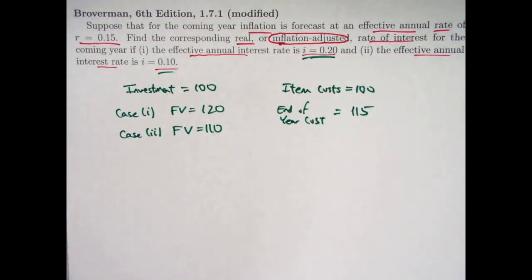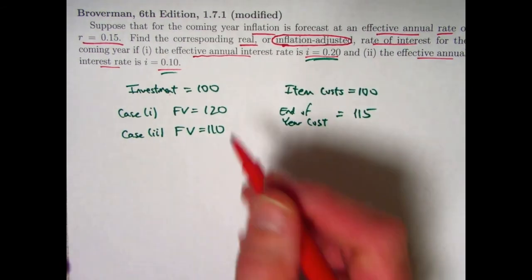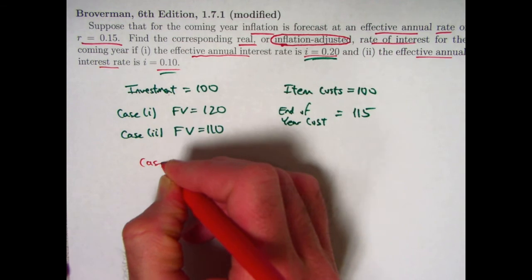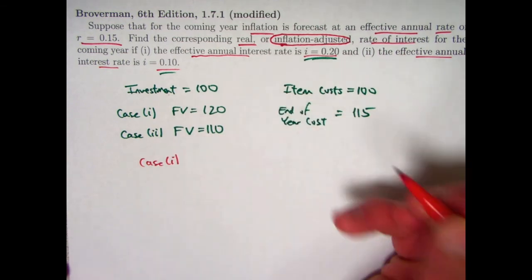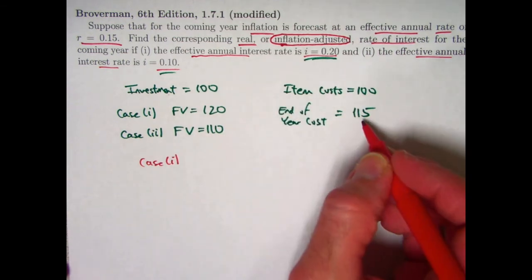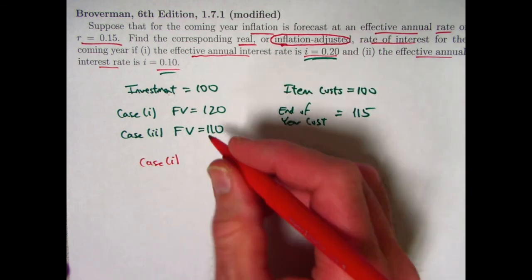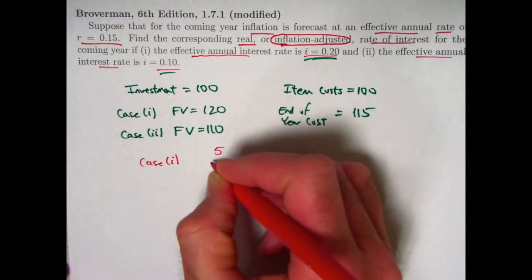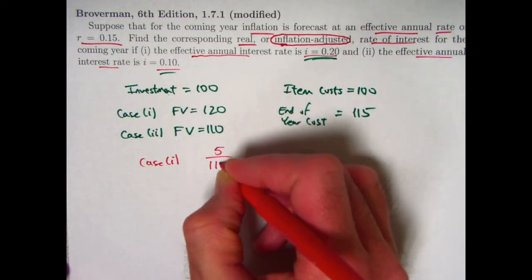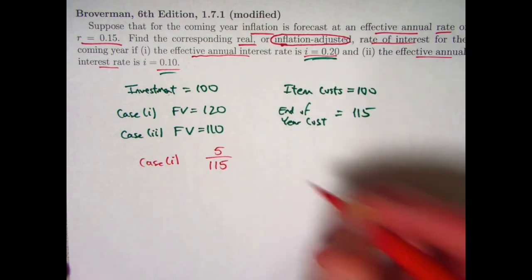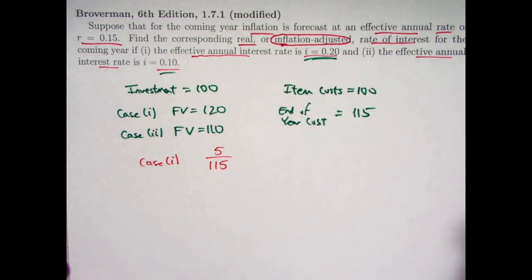So as far as a real or inflation-adjusted rate of interest, in case one, you've got five left over. You can buy this 115 item with five left over. That amount left over as a percentage of the year-end cost of the item is a measure of how much your buying power has gone up.